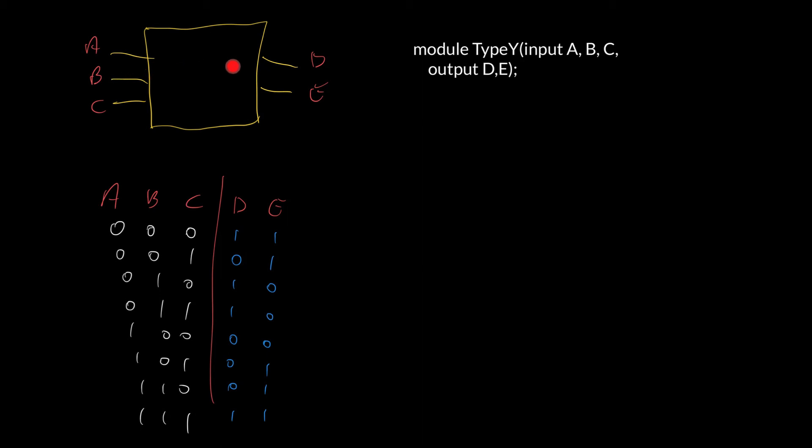We want to describe this chip here in Verilog. We're going to call our chip, the type of our chip, Type Y. It's got three one-bit inputs and two one-bit outputs, and it's given by this truth table here. It's combinational logic fully described by the truth table.